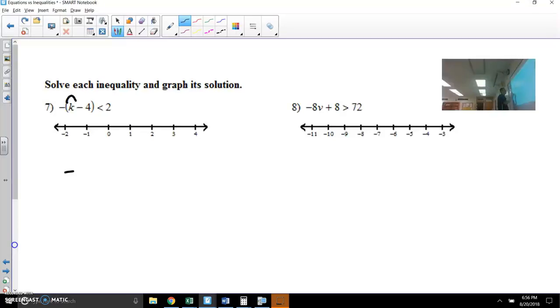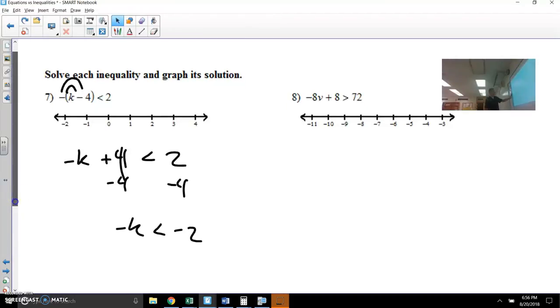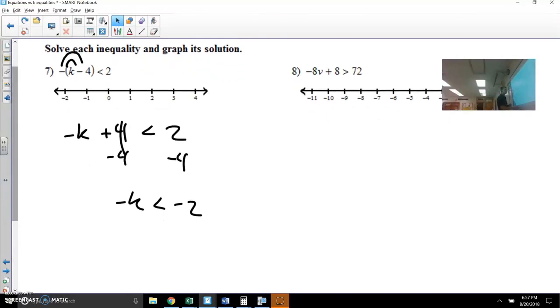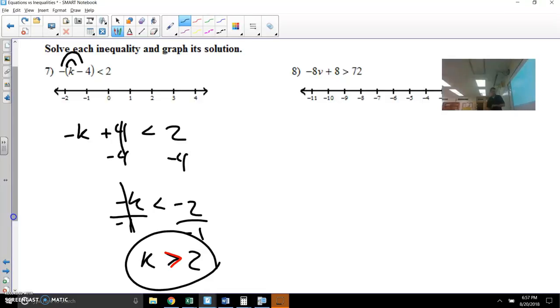This is negative 1 times k. This is negative 1 times negative 4, positive 4, and then rewrite the less than 2. Next, let's talk about subtracting 4. So that gives you negative k less than negative 2. And to finish this problem out, you could either think about it as multiplying by negative 1 or dividing by negative 1, but it doesn't matter because either one is going to change the sign in the middle. That sign has changed directions. And so, yes, 2 negatives divide to make positive.